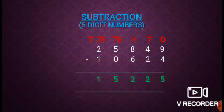Subtraction of a 5-digit number. Here, the places are ones, tens, hundreds, thousands, ten thousands. 25,849 is the minuend and 10,624 is the subtrahend. The digits are arranged at the various places from ones to ten thousands. Now, start subtraction from ones place.